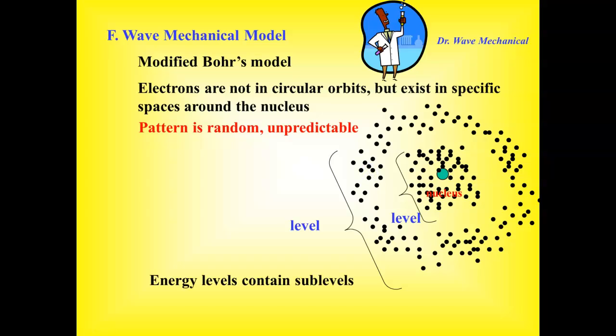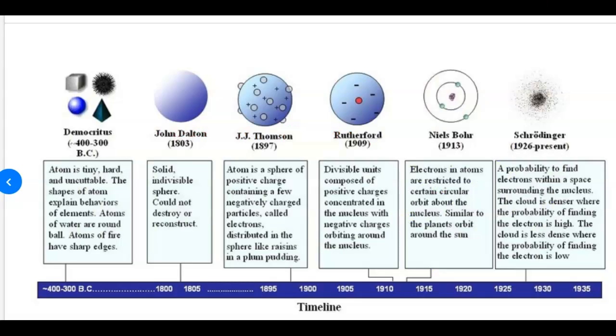The other point that the wave mechanical model made up through all of these scientists' discoveries and mathematical equations is that this energy level has different parts to it. A level has sub-levels. The sub-levels have another degree of complexity known as orbitals. But we'll get into that later on. So let's review one more time. Democritus and his crew said that atoms are tiny, hard, they are uncuttable, they are indivisible. That was the idea that they believed was true.